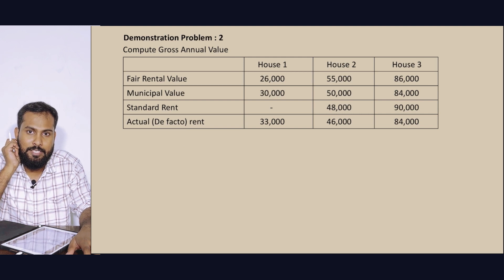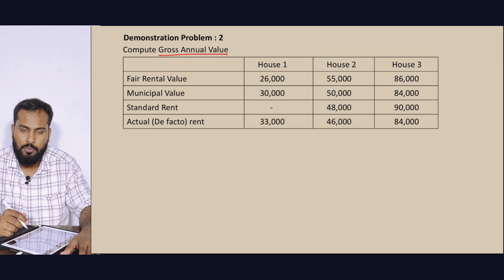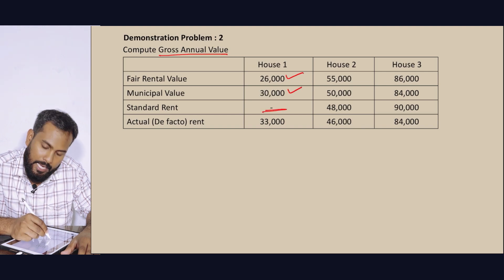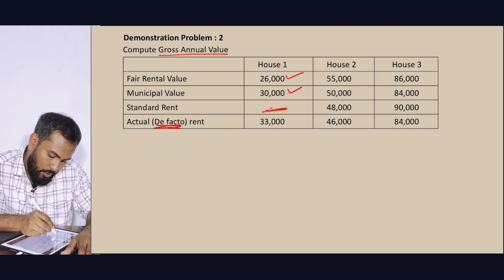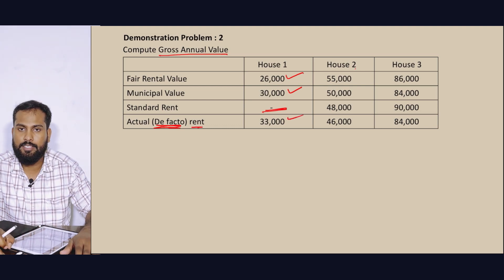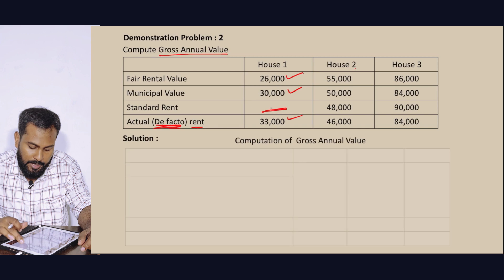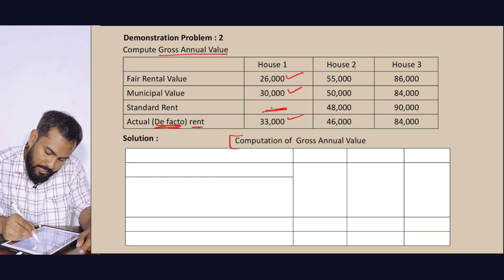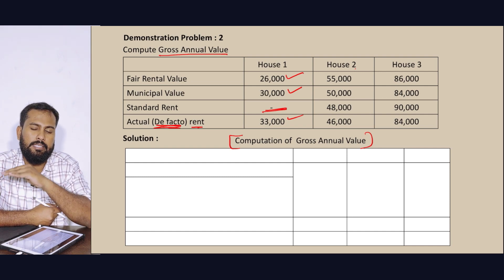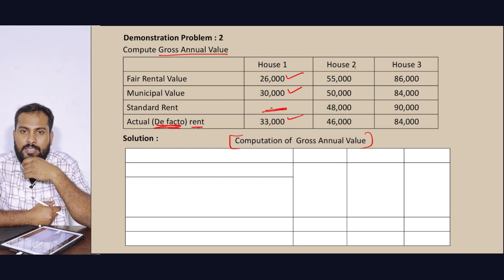Three houses are calculated — Computation of Gross Annual Value. Fair Rental Value: 26,000. Municipal Rental Value: 30,000. No standard rent. Actual rent — de facto rent: 33,000. House 2: 2,300. I will do a table for you — Computation of Gross Annual Value. That is how you will present at the exam.